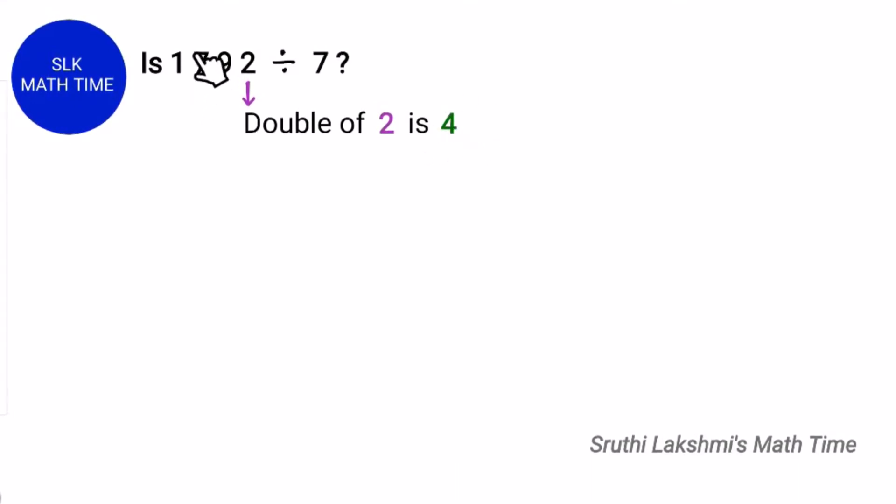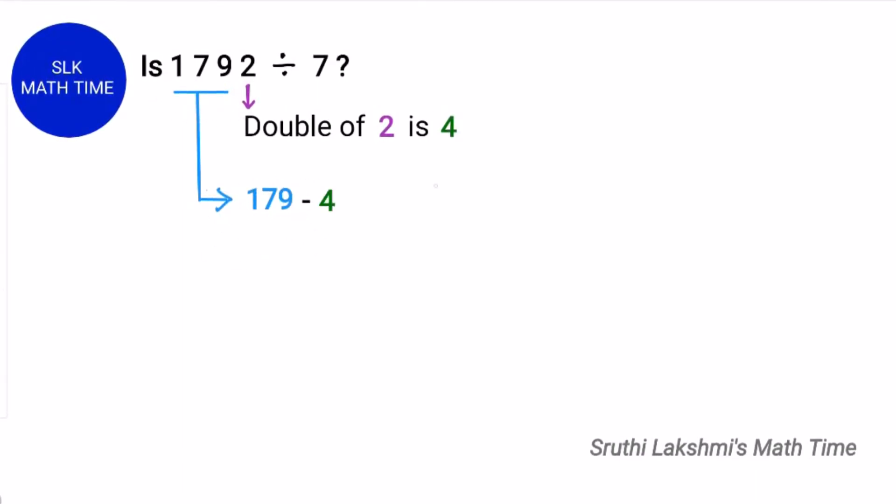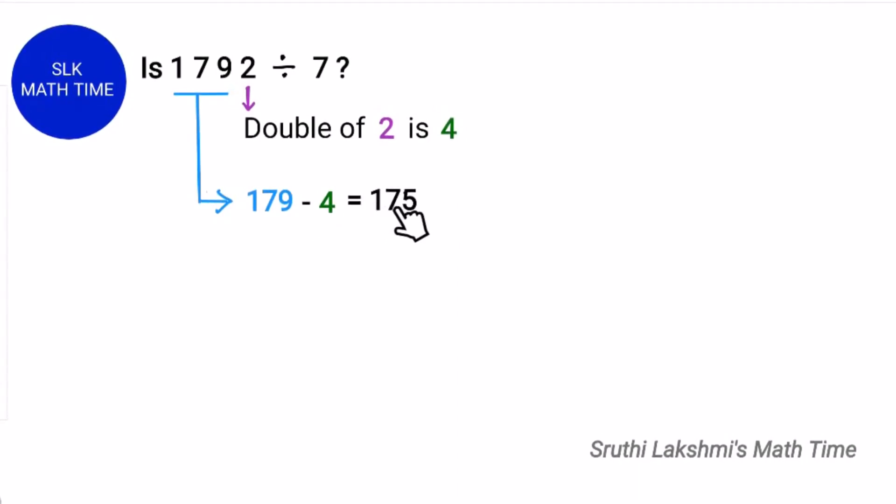Subtract 4 from the rest of the digits. So here it is 179. So 179 minus this 4. 179 minus 4 is 175.